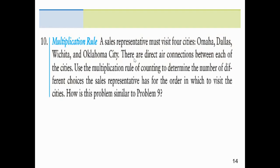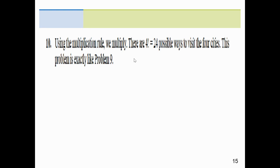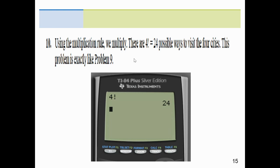A sales rep must visit four cities — Omaha, Dallas, Wichita, and Oklahoma City. Using the multiplication rule: four choices for the first city, then three, then two, then one — giving 24 possible routes. That's the same as 4 factorial equals 24. For something this small you can do it in your head, but the multiplication rule and factorial give the same result.